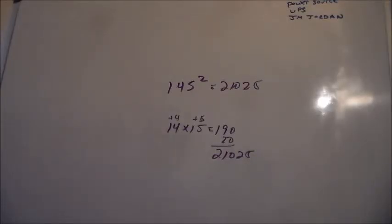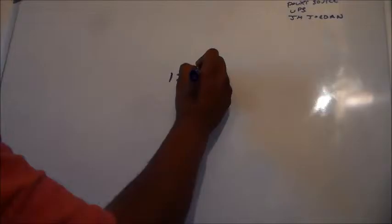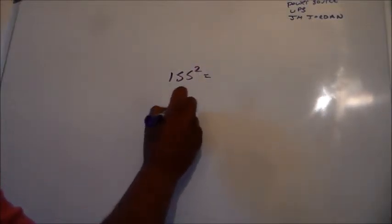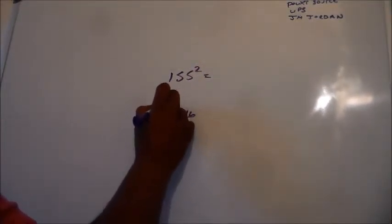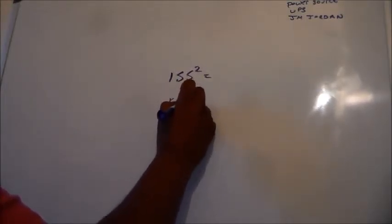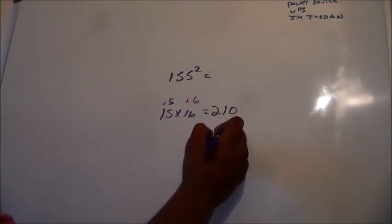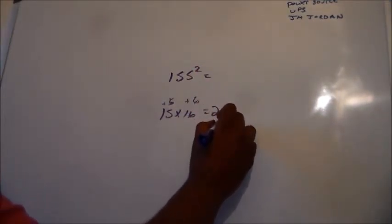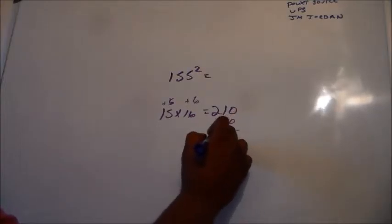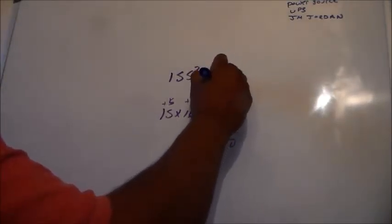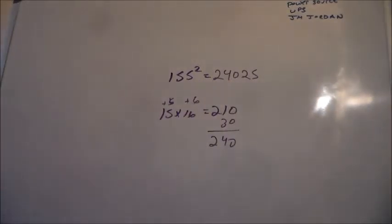And sometimes, I kind of, I messed up, so. I just, since I'm giving you guys this information, I just like to make sure things are accurate here. Let's try 155 squared. 15 times 16. 24,025 is the answer.